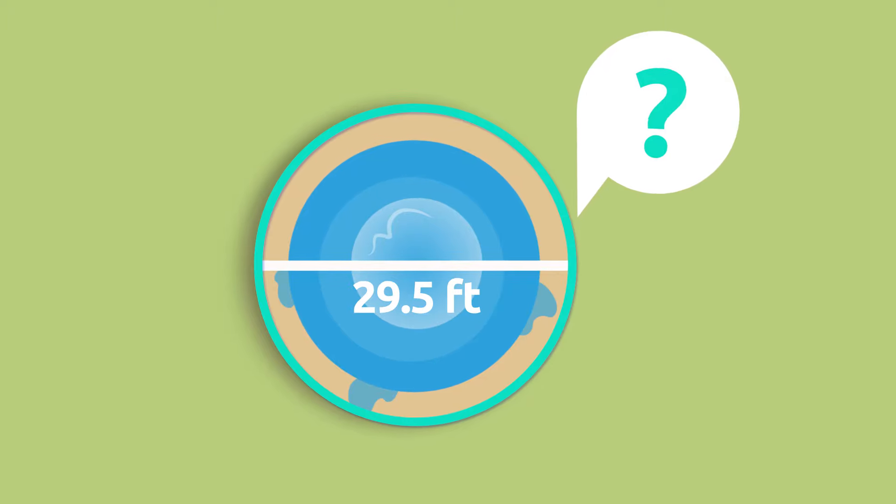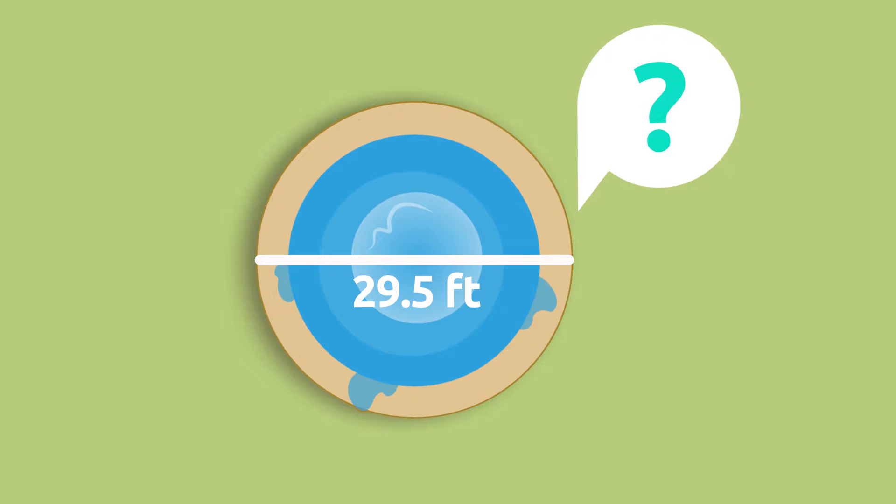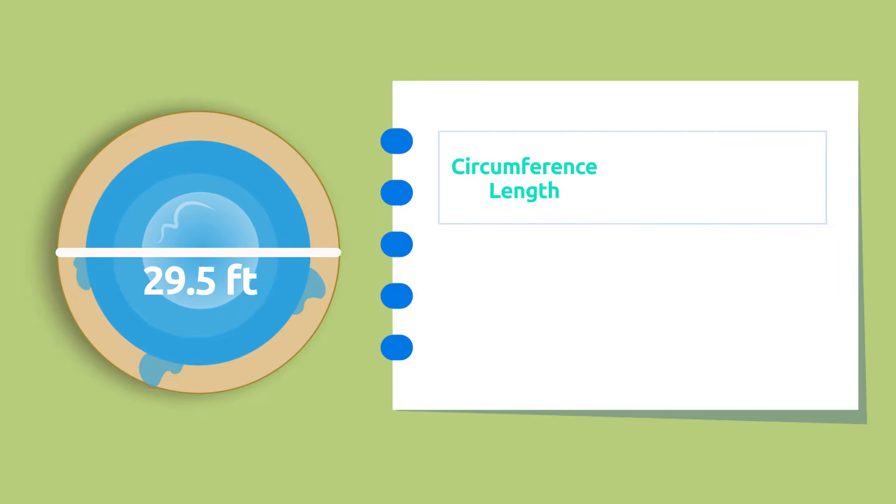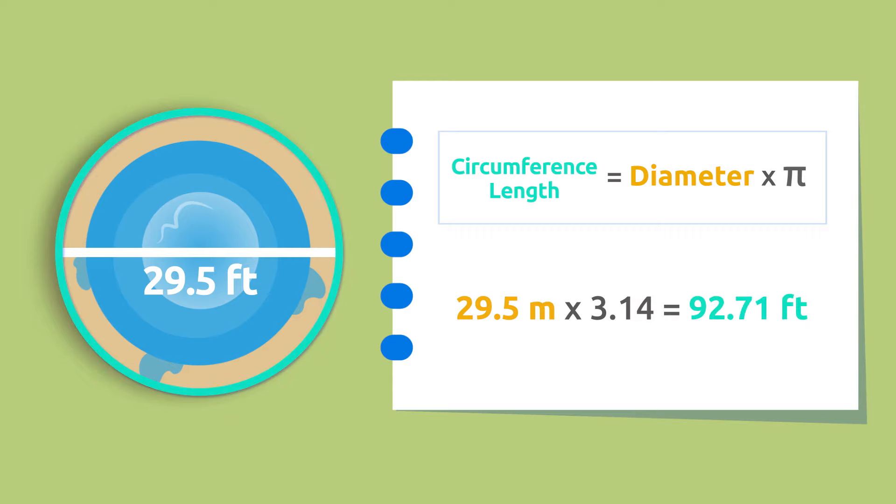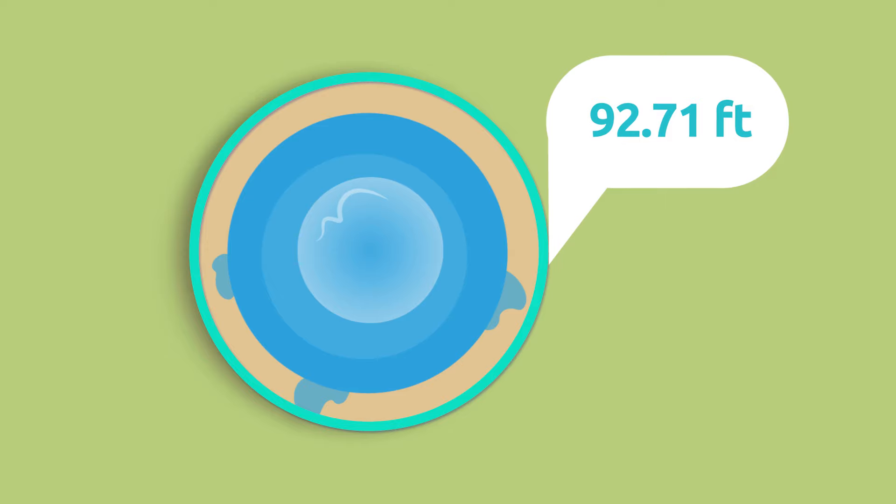How many feet of fencing material does he need to buy? To figure it out, we need to calculate the length of this circumference. We multiply the diameter by pi. The mayor needs to buy 92.71 feet of fencing material to surround the fountain.